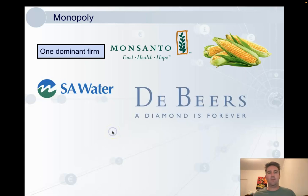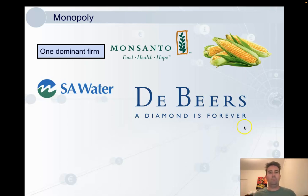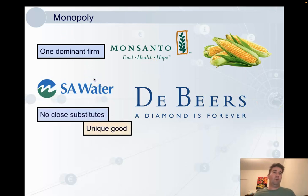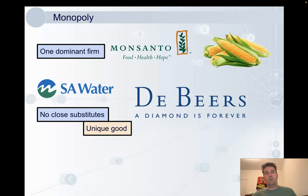Likewise, De Beers at its peak sold more than 80% of the world's diamonds, so they were by far the dominant firm there. The good of a monopoly also has no close substitute — it is unique. For example, no other precious stone is quite like a diamond, and genetically modified corn is not like regular corn.